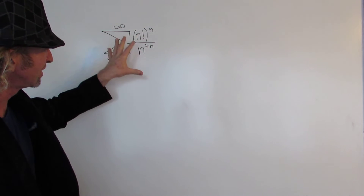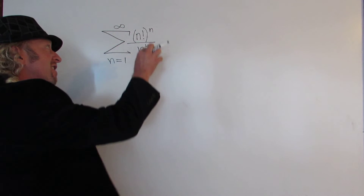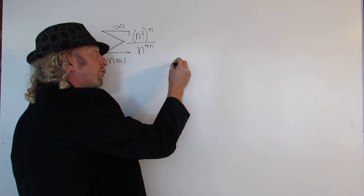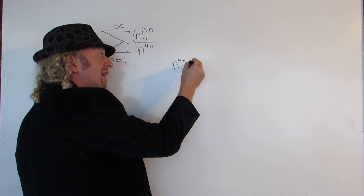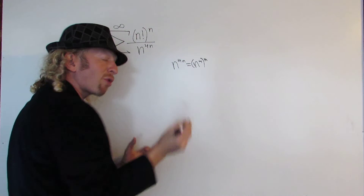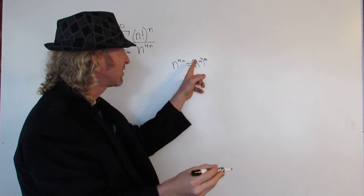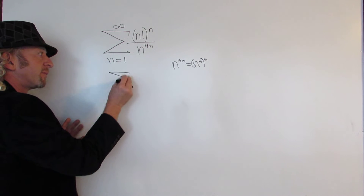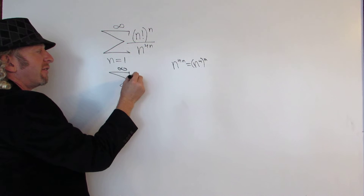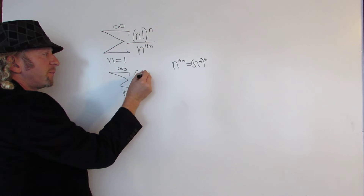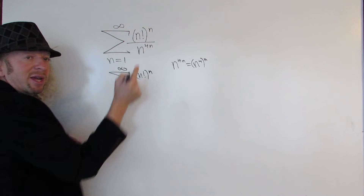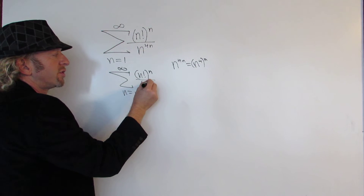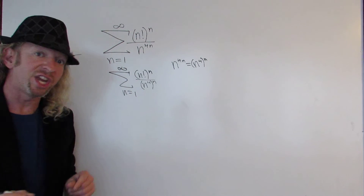The idea here, when you see something like this, is to notice right away that you have these n's. So you can rewrite this. Note that n to the 4n can be written as n to the 4, to the n — that's a property of exponents, because this is 4 times n. So we can write this as the infinite sum as n runs from 1 to infinity of n factorial to the n over n to the 4 to the n.